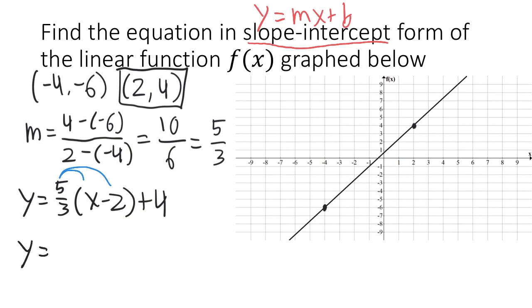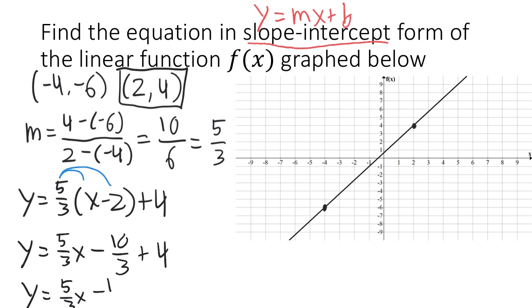Multiplying inside: 5 thirds times x is just 5 thirds x. And then 5 thirds times negative 2 is negative 10 thirds, plus 4. So we have 5 thirds x minus 10 thirds plus 4. Since 4 is the same as 12 over 3, negative 10 over 3 plus 12 over 3 is positive 2 over 3. So what we end up with is 5 over 3 x plus 2 over 3.